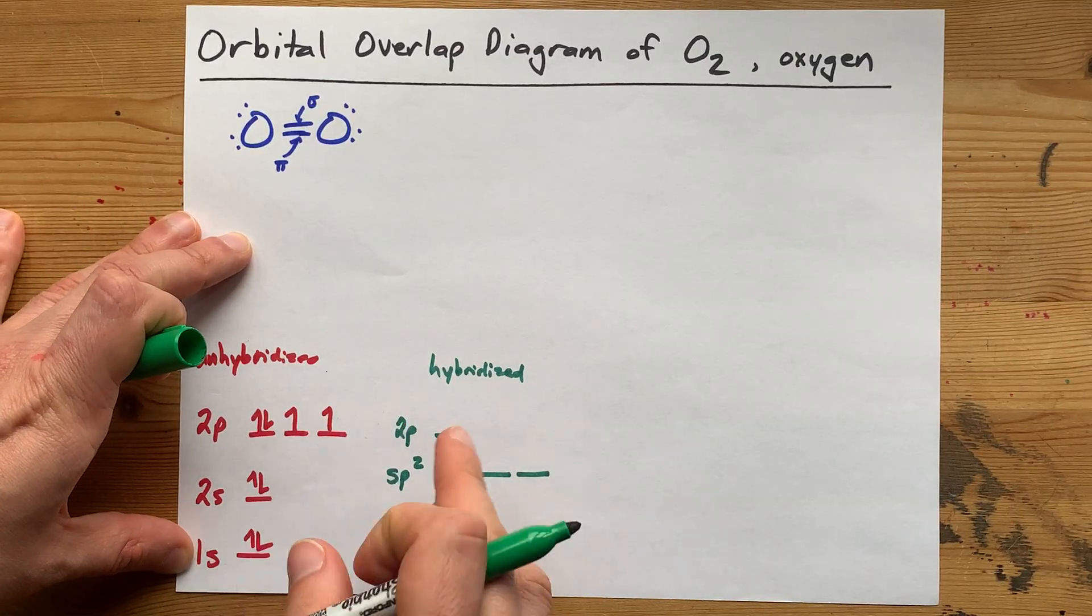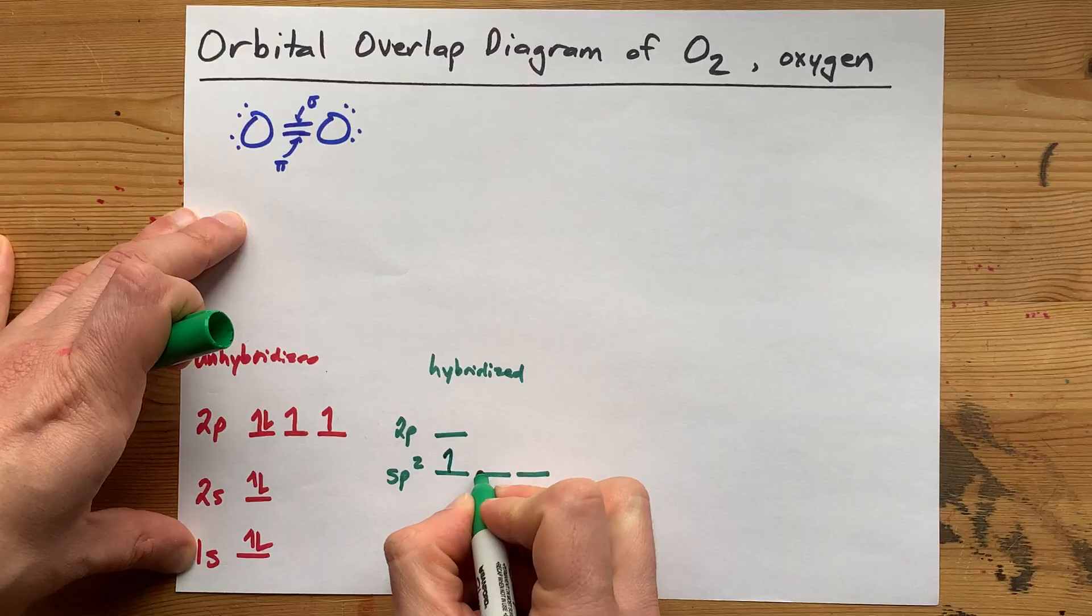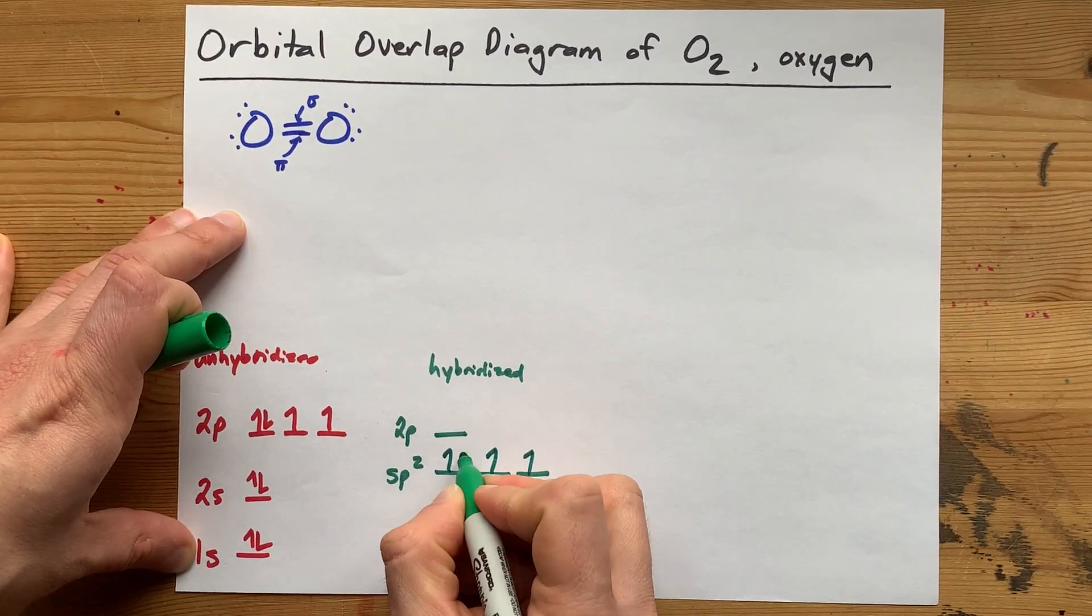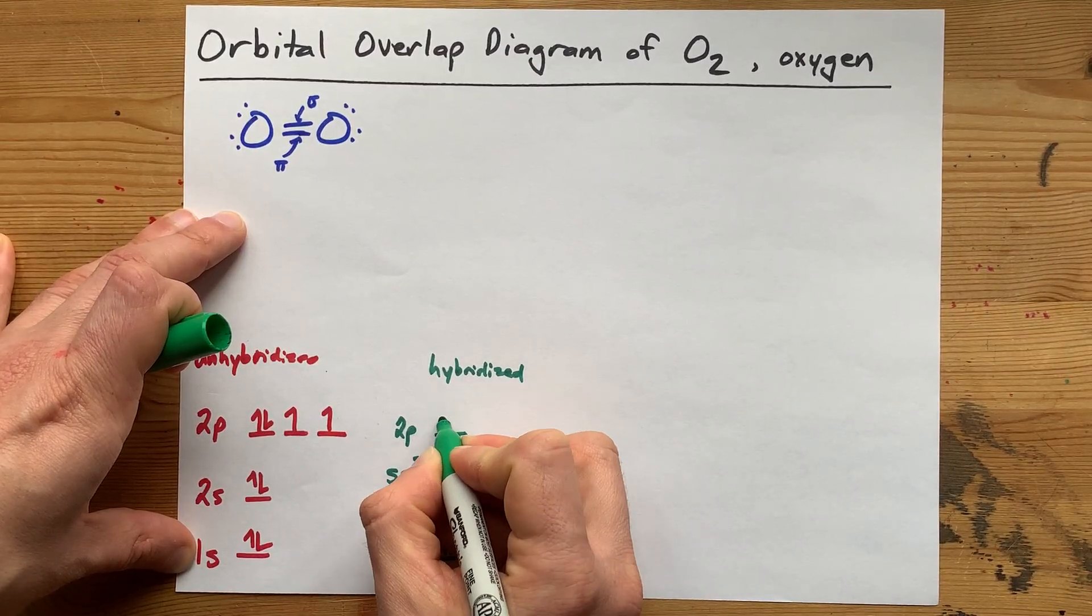Now I'm going to distribute these electrons around. 1, 2, 3, 4, 5, 6.